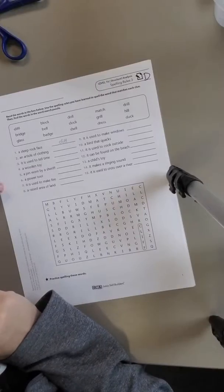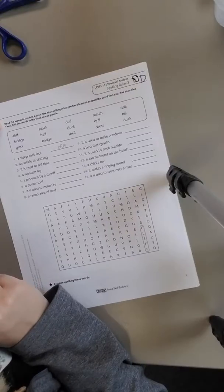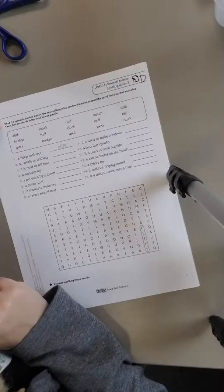The instructions say: Read the words in the box below. Use the spelling rules you have learned to spell the word that matches each clue, then find the words in the search puzzle.